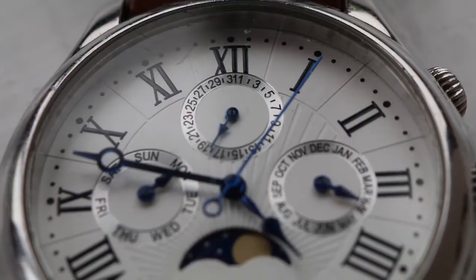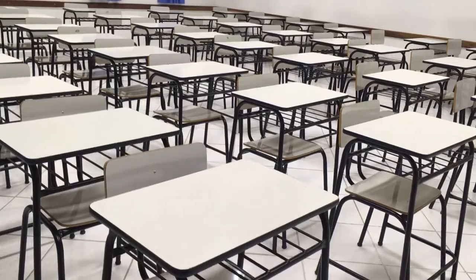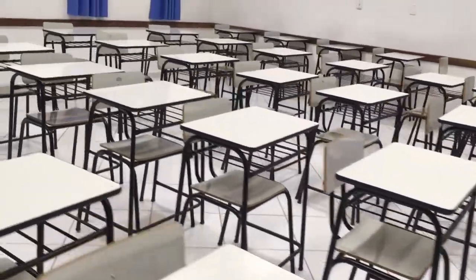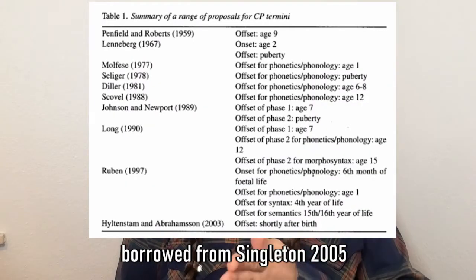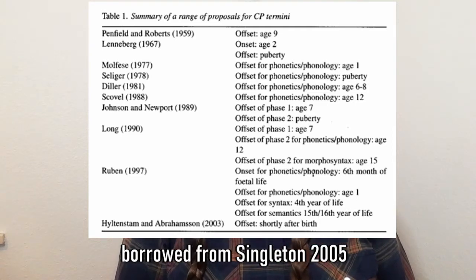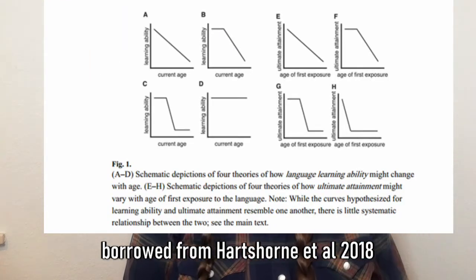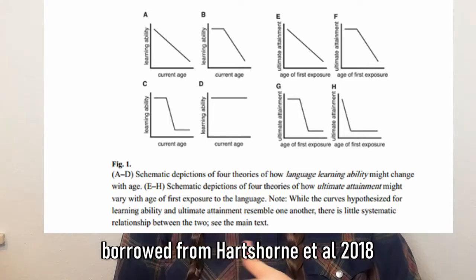Number seven: do older learners have fewer opportunities to learn from native speaker input and suffer from less time and interest to devote to language learning due to adult responsibilities like work and child rearing? Number eight: if age really is the most critical factor, what is the cutoff when language learning ability begins to decline? Is it a gradual decline or a sharp drop-off? Does the decline continue with age or is there a floor that represents the lifelong low point of learning potential? Many researchers are looking into these questions, and I give you this long list to show you the things that we don't know.